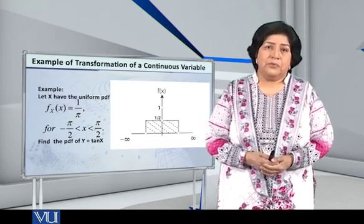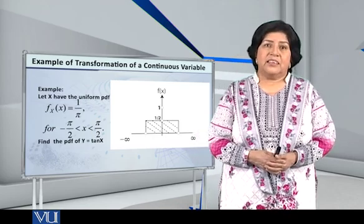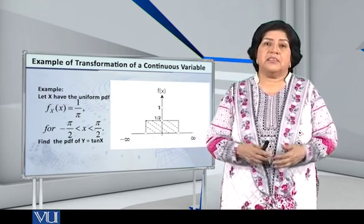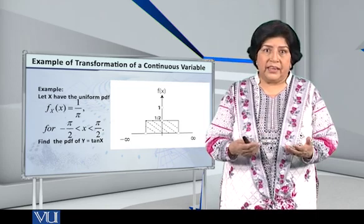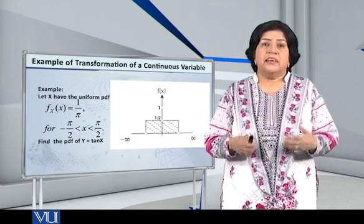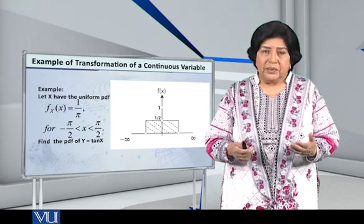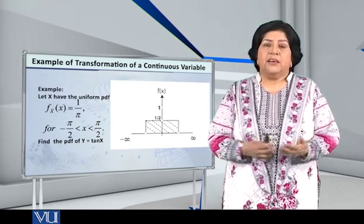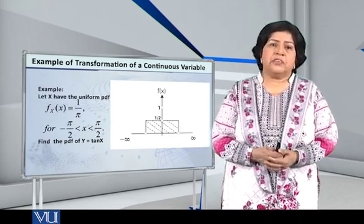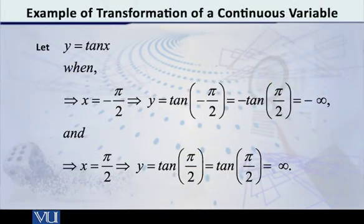Now, we are interested in determining the density of the transformed variable y, where y is given by tan of x, tangent of x. If this is the transformation, then how will we proceed? The first step is that we have the change of limits. So, x is going from minus π by 2 to π by 2. So first of all, when we let x be equal to minus π by 2, then what will y be equal to, tan of minus π by 2?